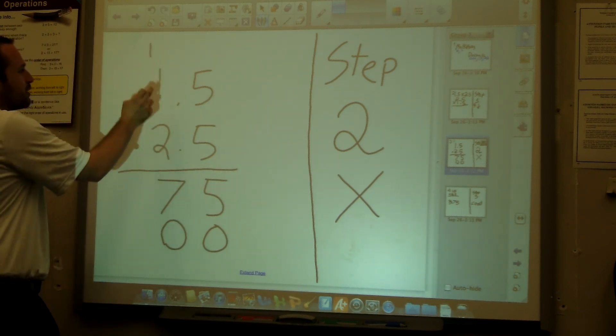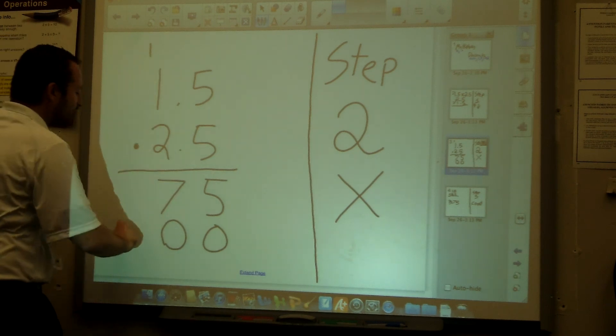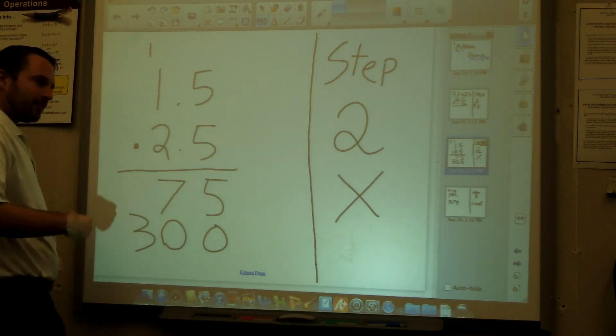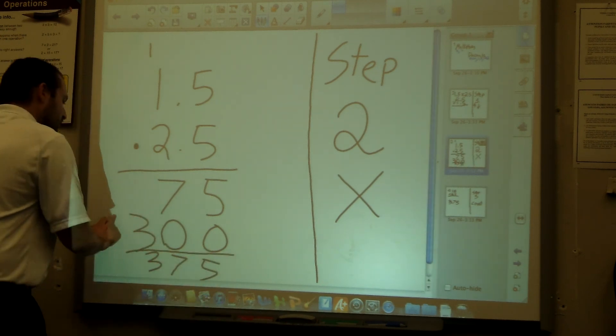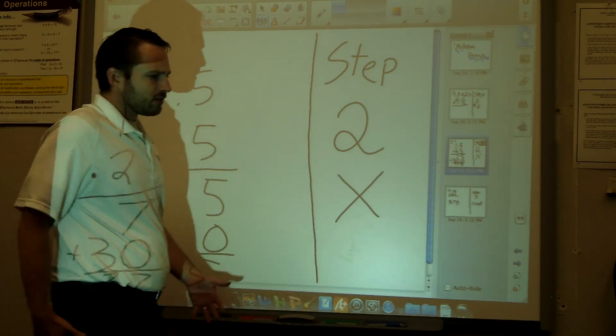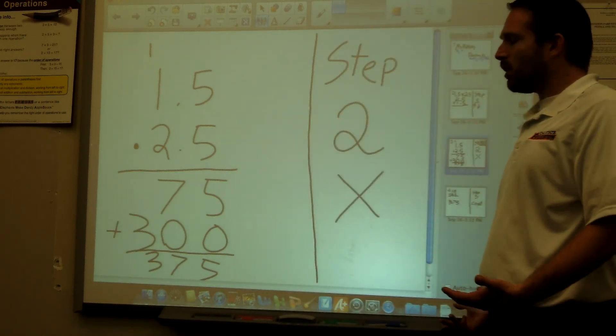2 times 1 is 2. Add that 1, you get a 3. And you add those up and you get 375. Now you might be thinking, wait, what about those decimals? Well you know what, we just forgot they existed. It didn't matter, it doesn't matter until step 3.